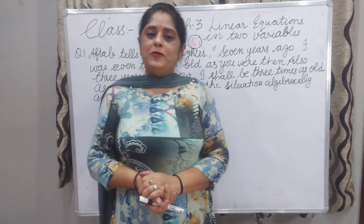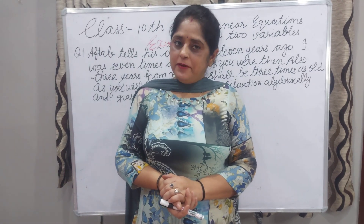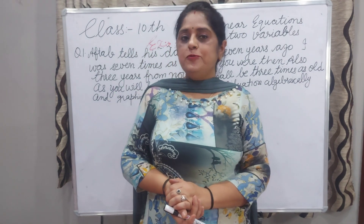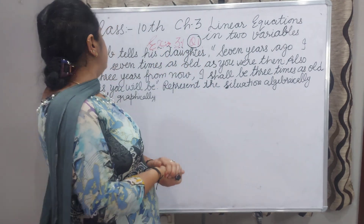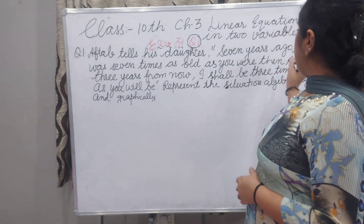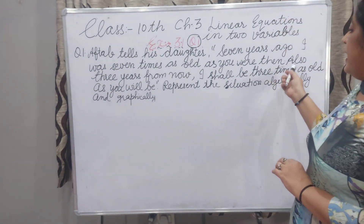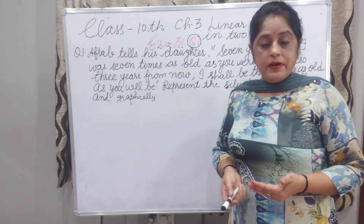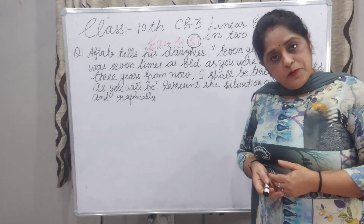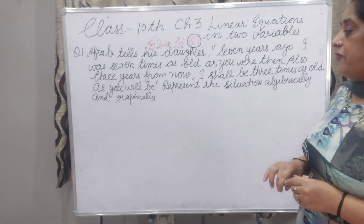Hello everyone, today I will explain exercise 3.1, question number 1. Chapter 3 is linear equations in two variables. The statement is: a father tells his daughter, '7 years ago I was 7 times as old as you were, and also 3 years from now I shall be 3 times as old as you will be.' Represent the situation algebraically and graphically.